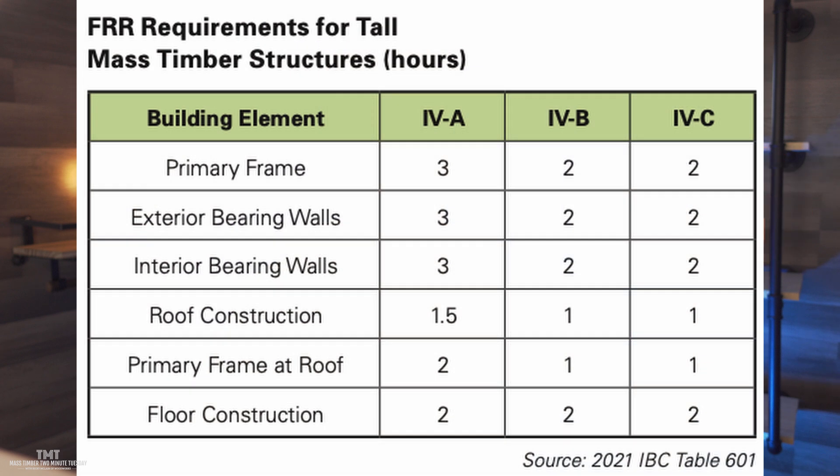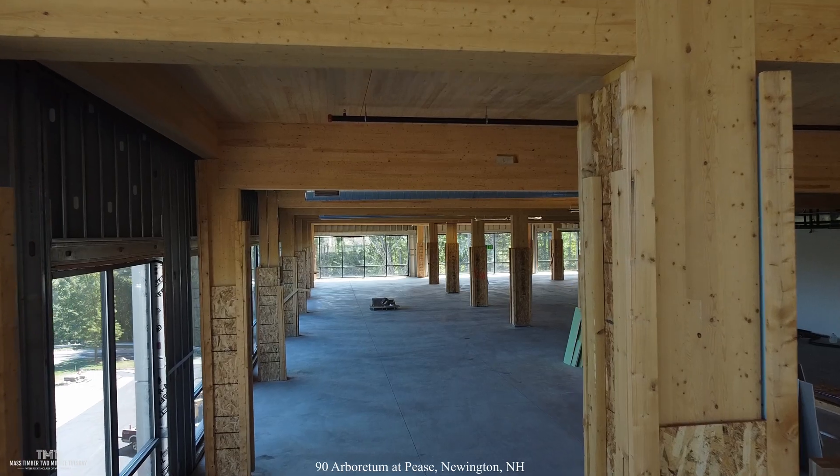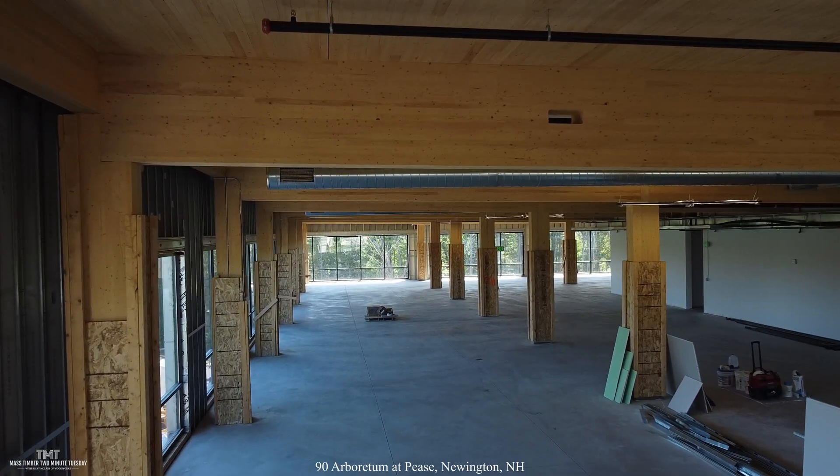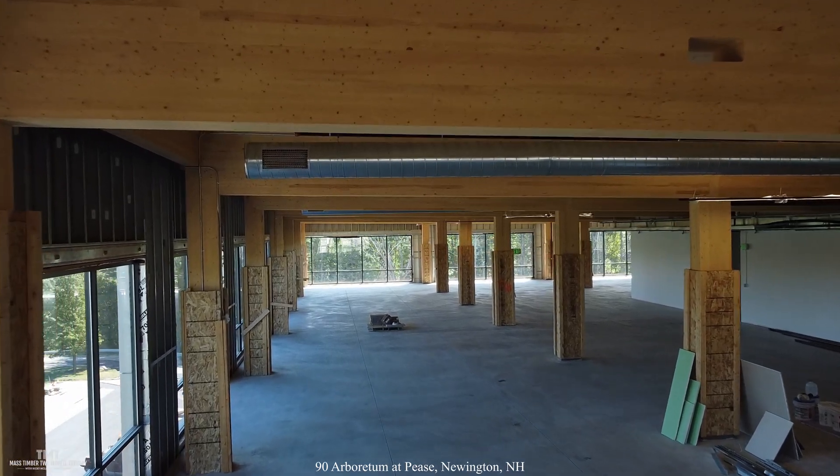There are some relative differences in these new construction types — things like fire resistance ratings. As you get to the taller end of the spectrum, such as 4A construction, fire resistance ratings go up. Similarly, as you get to the taller end of the spectrum, the amount of timber that can be exposed goes down. In 4C construction, all of the mass timber on the interior can be exposed; in 4B, only some can be exposed; and in 4A, none of the mass timber on the interior can be exposed.